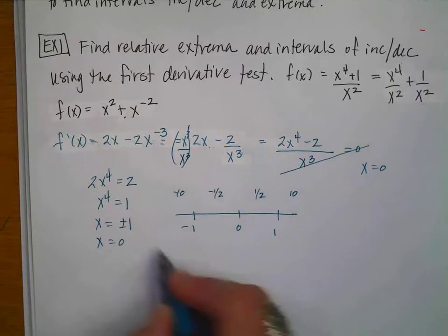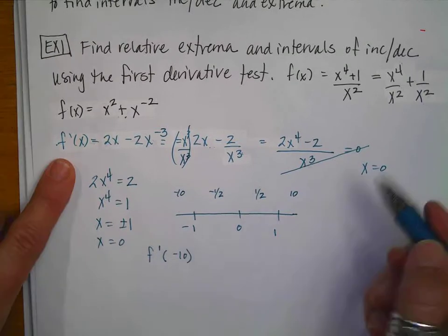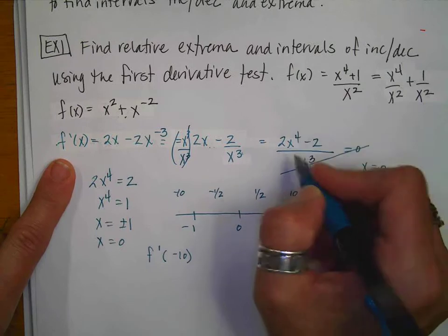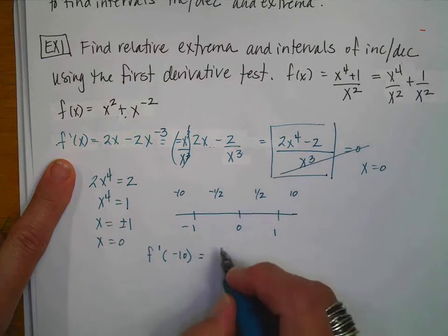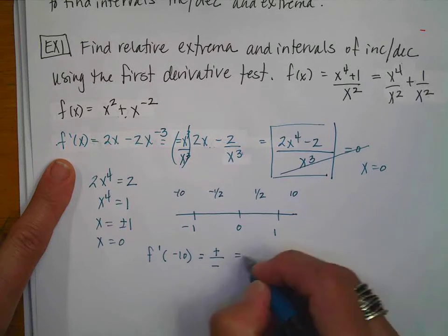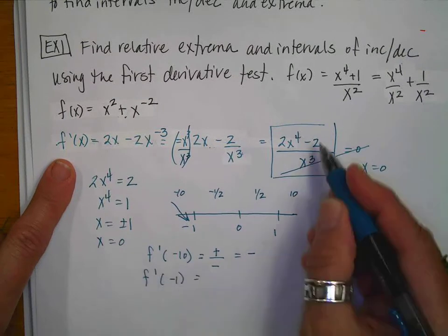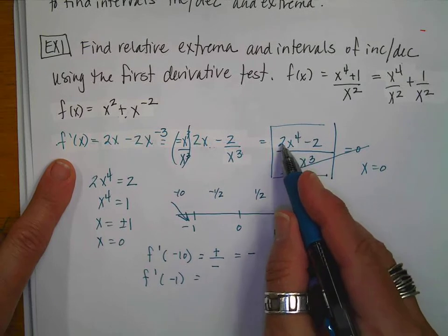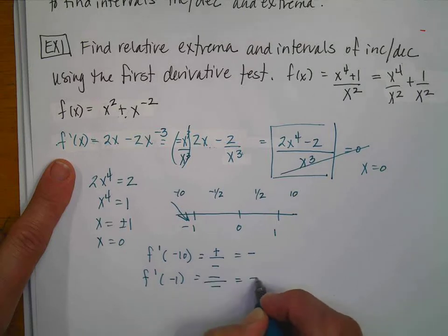Remember I'm only interested in the signs. Evaluating f' at negative 10: the numerator is positive and the denominator is negative, so this is negative — decreasing. Evaluating f' at negative 1: I get 2 minus 2, which is 0. And evaluating f' at negative one-half...